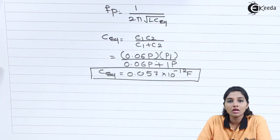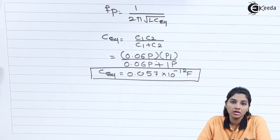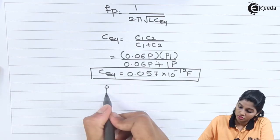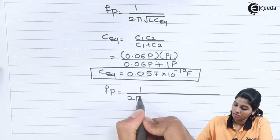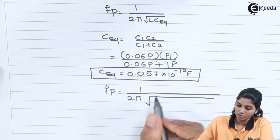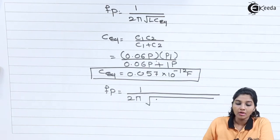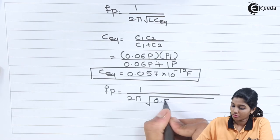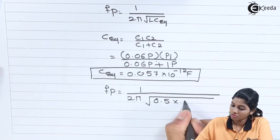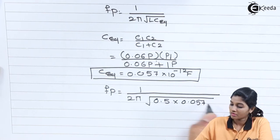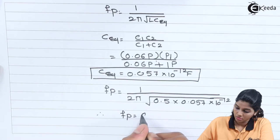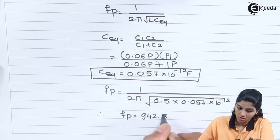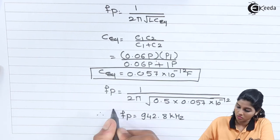Substituting this value of C_equivalent into the formula, Fp equals 1 upon 2π times the square root of 0.5 Henry into 0.057 × 10⁻¹² farad. Therefore, we get Fp equals 942.8 kHz.